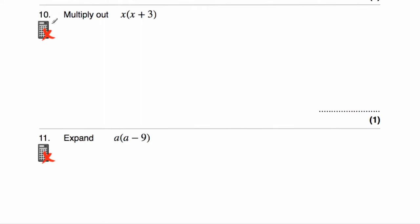Question number ten asks us to multiply out x(x + 3). To expand this bracket, we need to multiply what's inside by x. So we're going to do x times x — when we multiply x by itself, that's squaring it, so that's x squared. Then we've got plus, and x times three — in algebra, we just put them together to get 3x. The answer is x² + 3x.